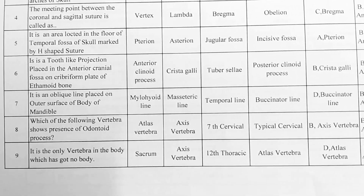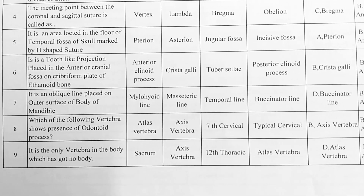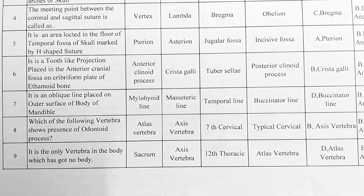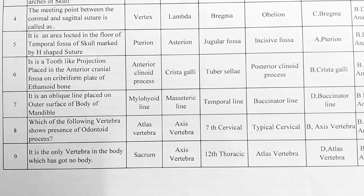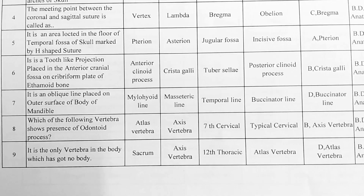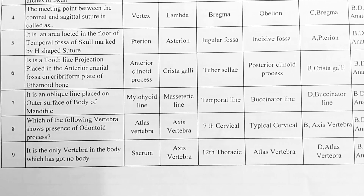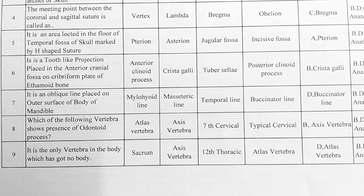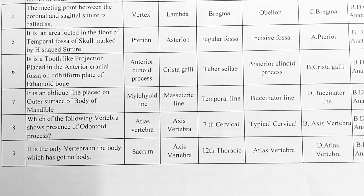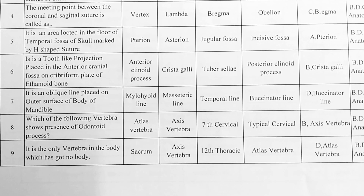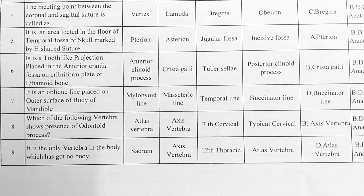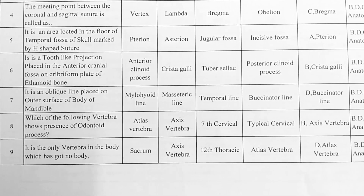Next. It is an oblique line placed on the outer surface of the body of mandible. Options — A: mylohyoid line, B: mesenteric line, C: temporal line, D: buccinator line. Option D is correct, buccinator line.